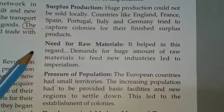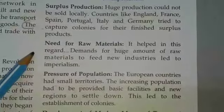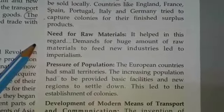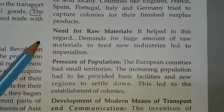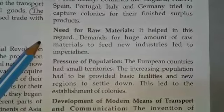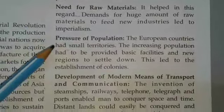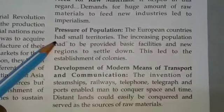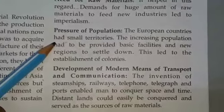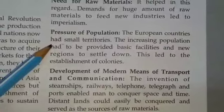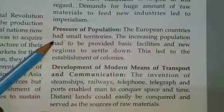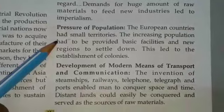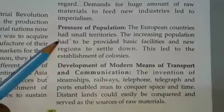Need for raw materials: demands for huge amounts of raw materials to feed new industries led to imperialism. Pressure of population: European countries had small territories. The increasing population had to be provided basic facilities and new regions to settle down. This led to the establishment of colonies.